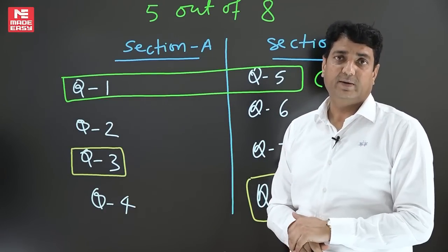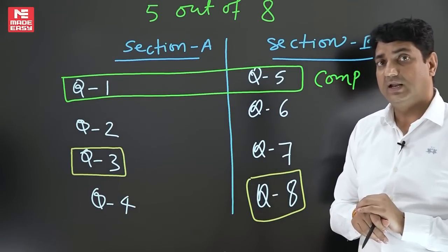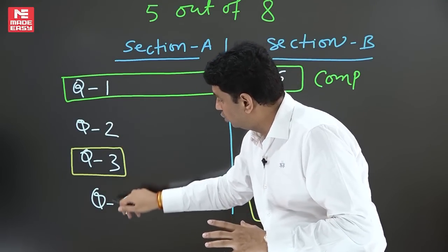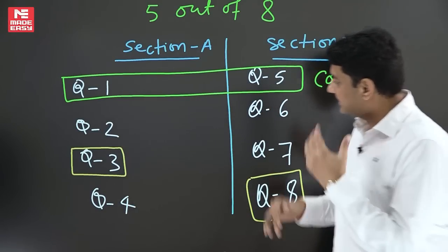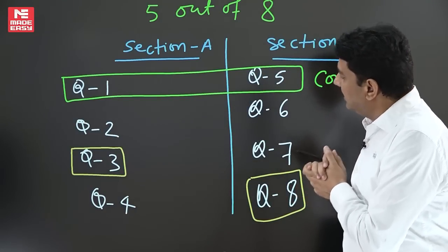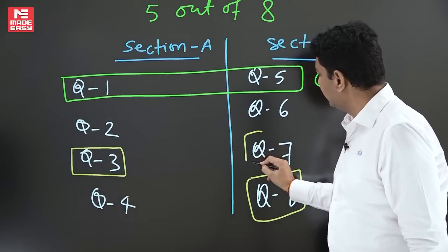Last question is remaining. For last question you have option two, four, six, and seven. Choose one out of these. Decide anyone you are free, and let us say I decide for question number seven.